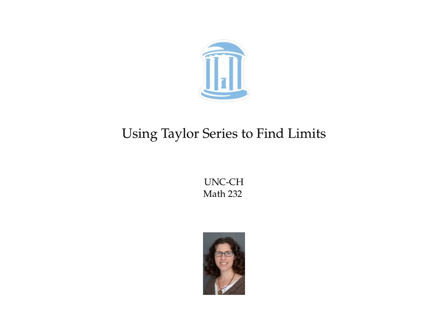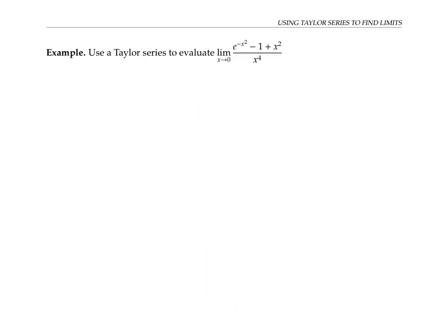In this video, we'll use Taylor series to find limits that are in indeterminate form. Consider this limit. If we plug in 0 in the numerator, we get e to the 0 minus 1 plus 0, or 1 minus 1, which is 0. And if we plug in 0 in the denominator, we get 0. So this limit has a 0 over 0 indeterminate form. Now instead of using L'Hôpital's rule repeatedly to find this limit, which would get to be kind of a mess considering the derivatives involved, let's use Taylor series.